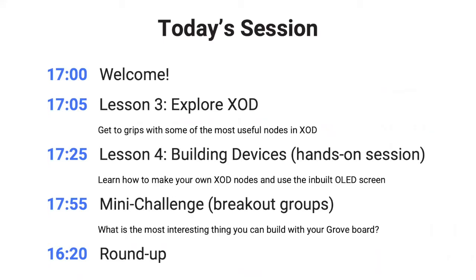So what are we going to be doing today? I've given you a quick welcome and recap. We're going to look at lesson three in the beginner's guide, which explores some useful nodes in ZOD. I have a few videos to show you examples - if you want to work through those tasks yourself, they're in the beginner's guide as step-by-step instructions. The reason for keeping that brief is to save time so we can get onto the interesting stuff, which is lesson four - building devices. We're going to learn how to build our own node in ZOD.